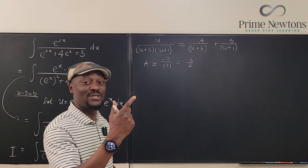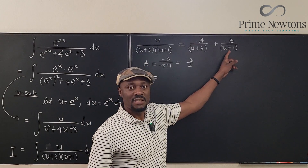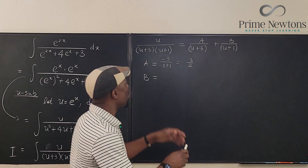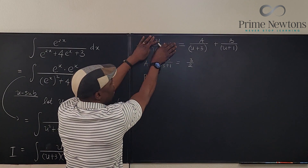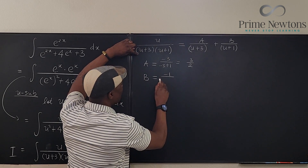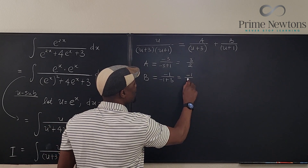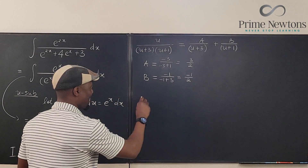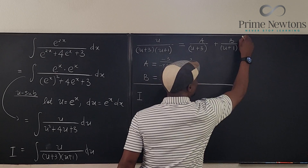Now for B: cover up u plus 1 and plug in negative 1. We get negative 1 over negative 1 plus 3, which is negative 1 over 2. So B equals negative 1 over 2. That's it — found both constants very quickly.